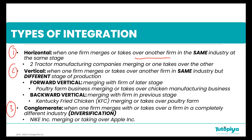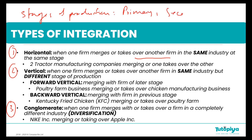With horizontal integration, there is no change in the industry and there is no change in the stage of production. When referring to stages of production, we're asking whether it is either primary, secondary, or tertiary level.